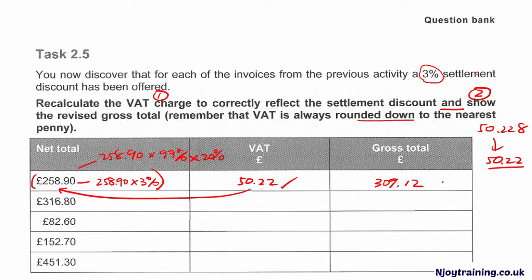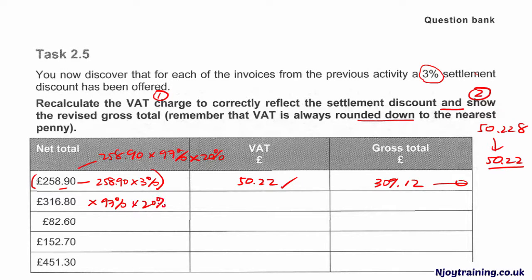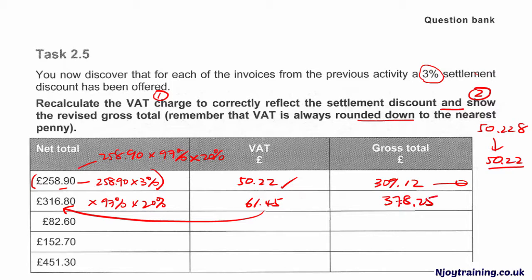So really, this figure is coming from 50.22 plus 258.90. To make the rest of the question fairly easy: once you're clear about what you need to do — net times 97% times 20% to get your VAT — then add that back to the initial net amount. That gives you 378.25. The rest of the question follows the same pattern.